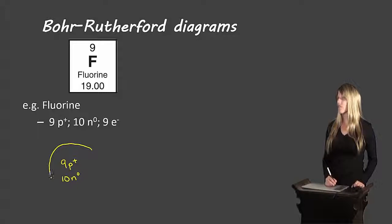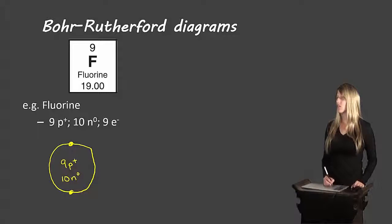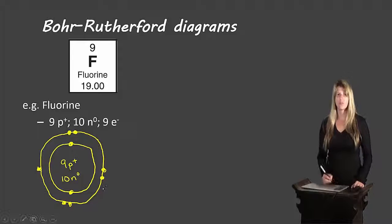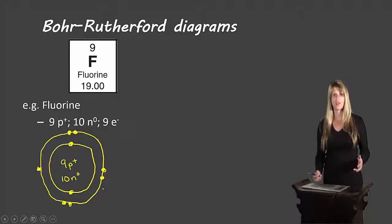And then we'll start drawing our first shell around that. So two electrons fit in the first shell. One, two. Now we still have seven left over. Nine minus two is seven. Those seven can fit in our second shell because the second shell can fit eight in total. So we have one, two, and then here we have our third, fourth, fifth, sixth, seventh, eighth, and ninth electron in total. So this is one way we could draw fluorine.